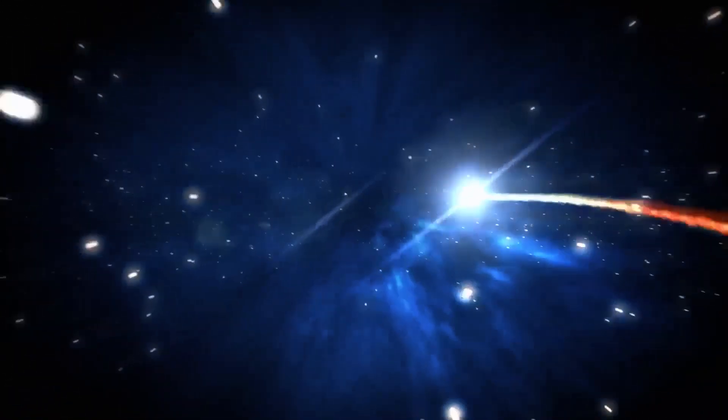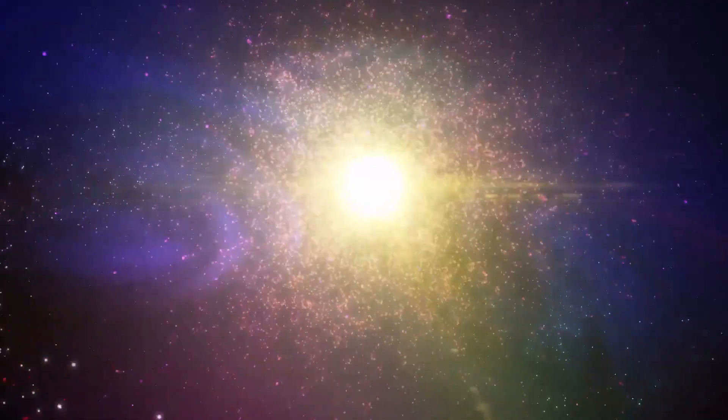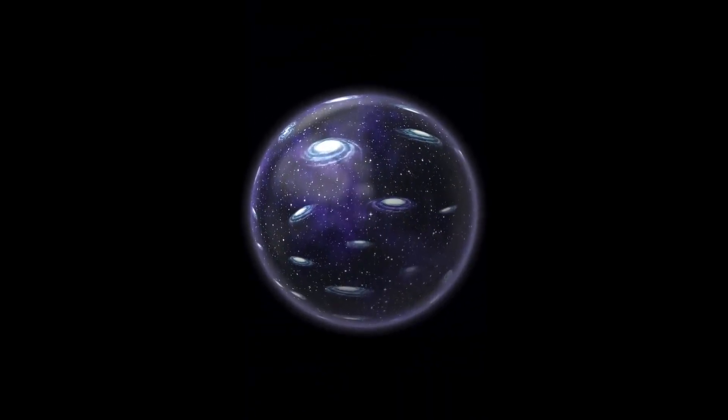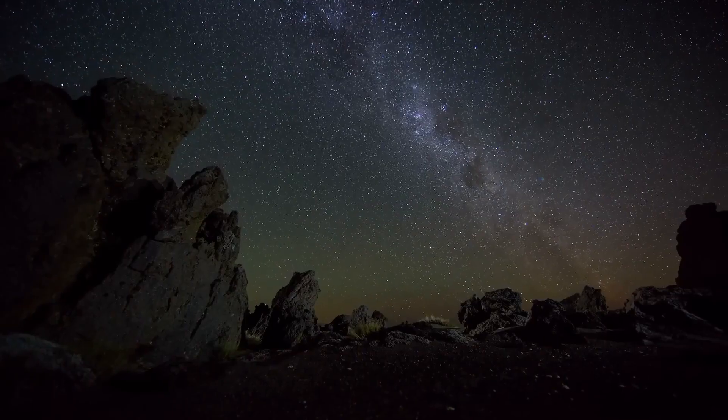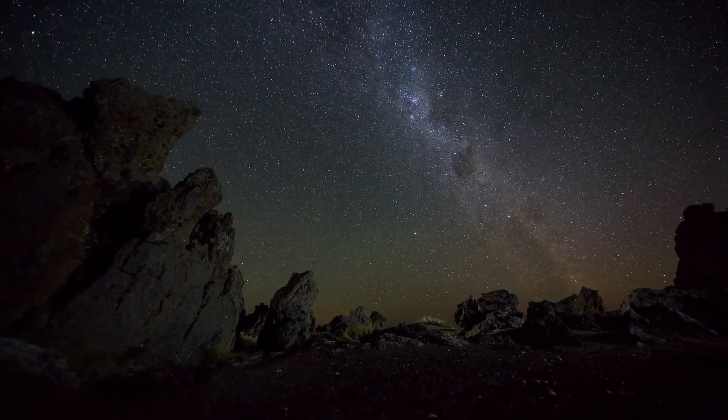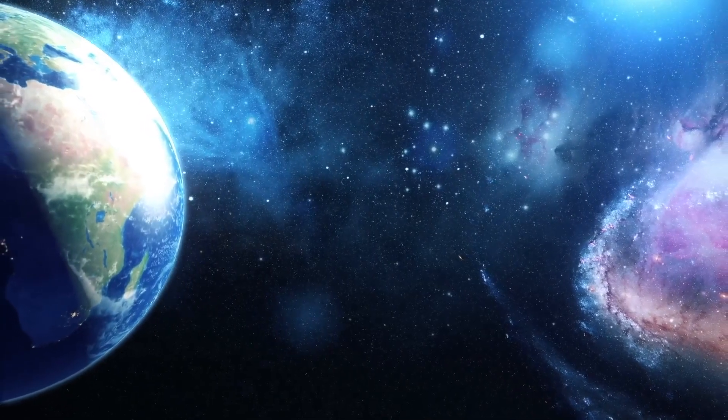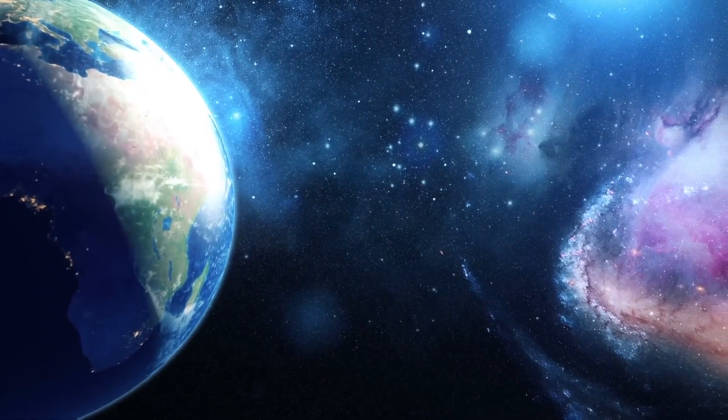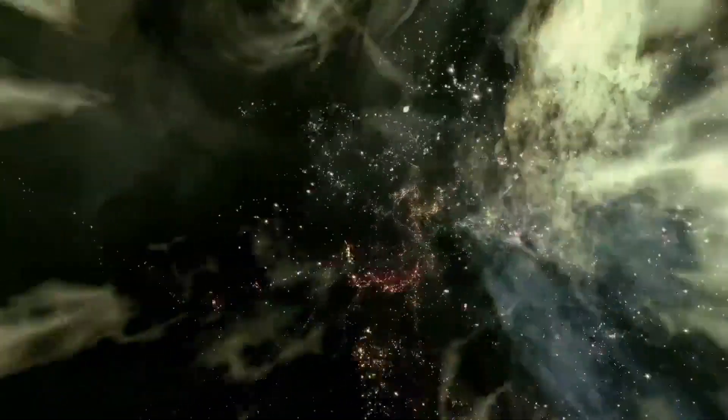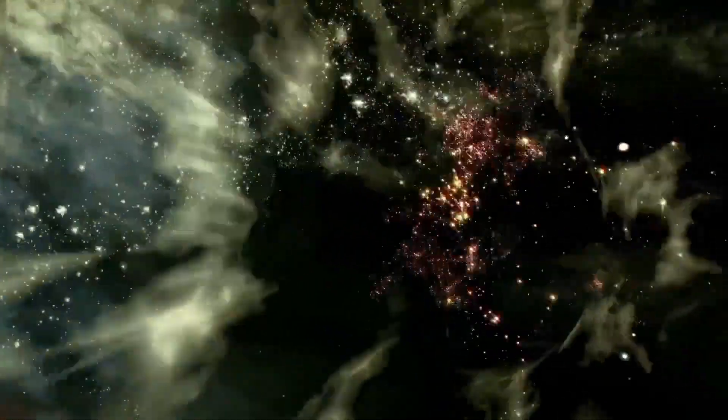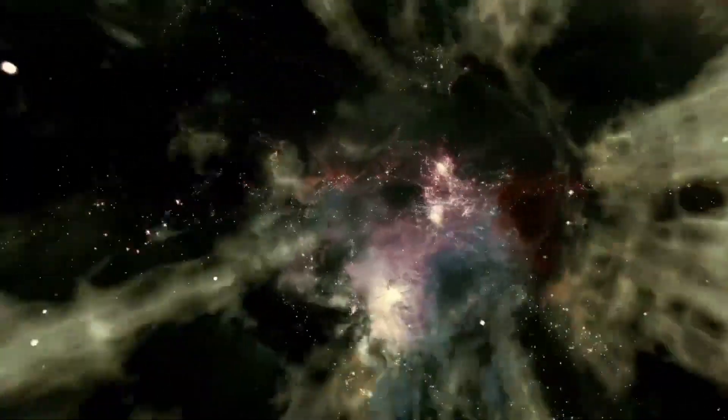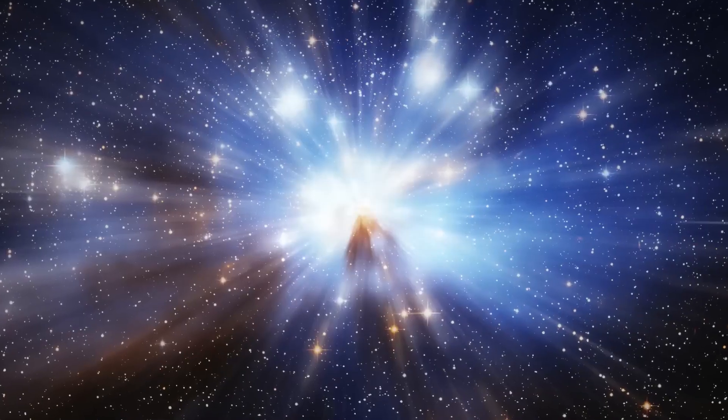If an object is so far away that its light would have taken more than 13.8 billion years to reach us, it remains beyond our observation. This boundary creates a bubble around us, known as the observable universe. The radius of this bubble extends approximately 46 billion light-years in all directions from Earth. Fascinatingly, this size is larger than the age of the universe itself because the universe has been expanding since its inception.